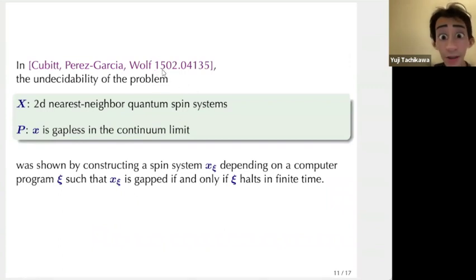Now, let me come to this interesting paper from 2015. In that paper, the undecidability of the problem where the class of systems is 2D nearest neighbor quantum spin systems, and the property you ask is whether the given system is gapless in the continuum limit, that was shown to be undecidable. And that was done by constructing a spin system which depends on the computer program, such that the resulting spin system is gapped if and only if the program ξ halts in finite time. Then because whether a program halts in finite time is undecidable, it follows that whether this particular spin system is gapped is also undecidable.